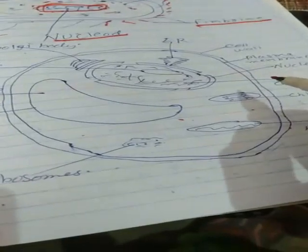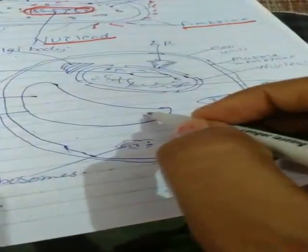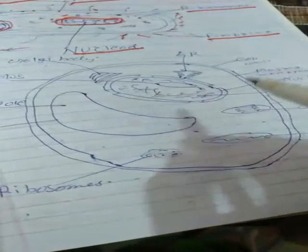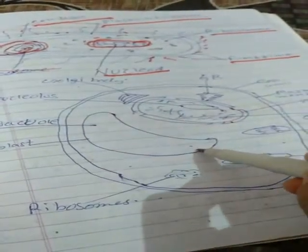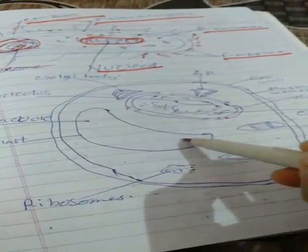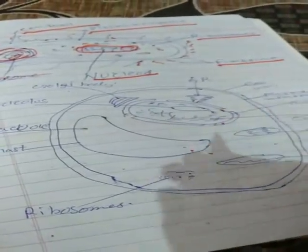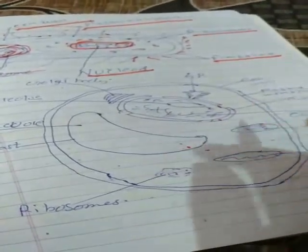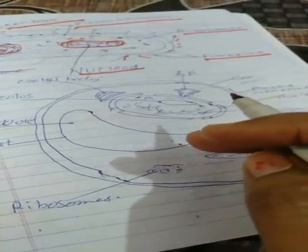Now, the eukaryotic cell. We have discussed that it is larger in size with the nucleus present at the center. There is also a vacuole present. All the cell organelles are present and they have specific shapes as they are bounded by special membranes.